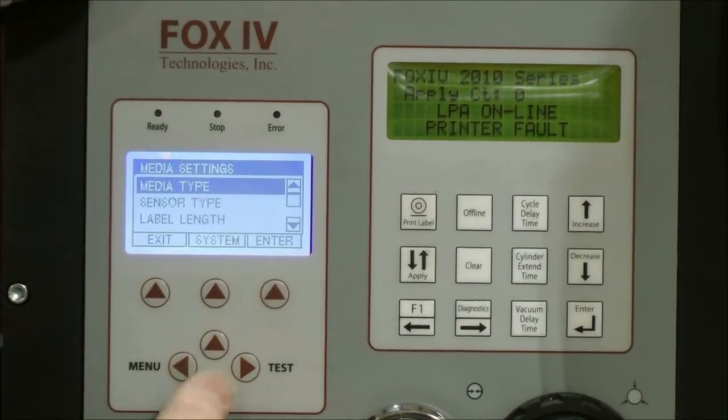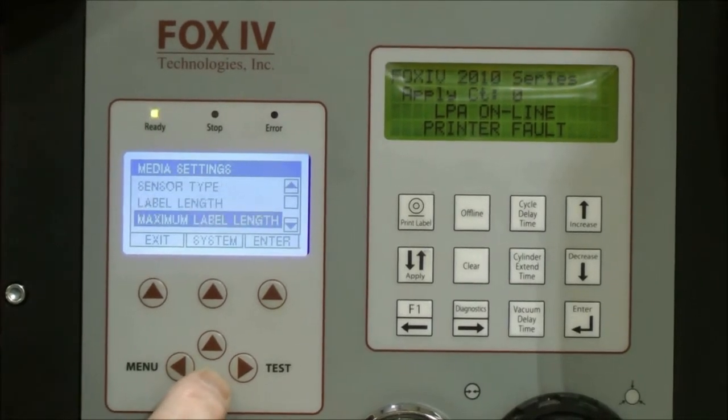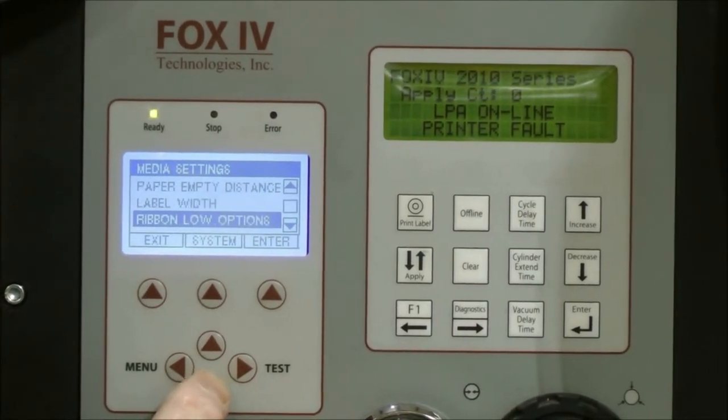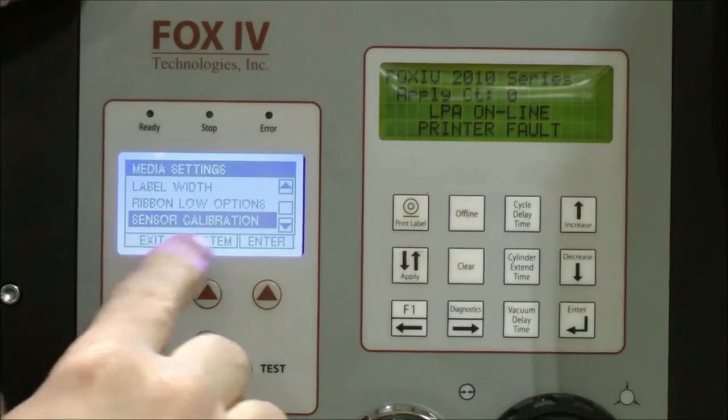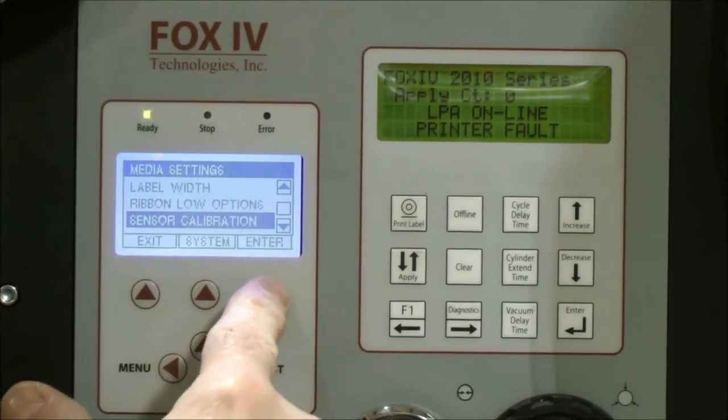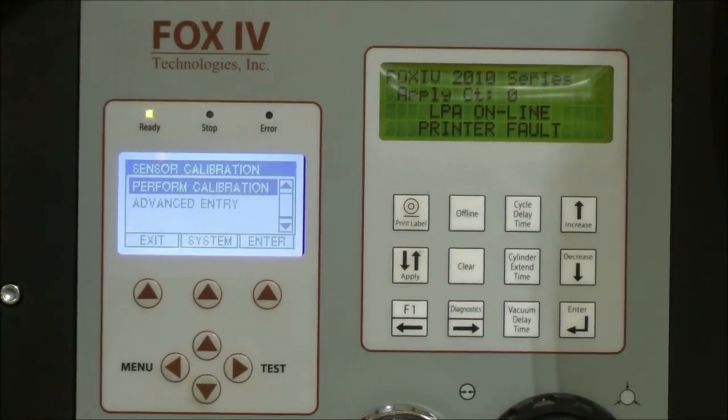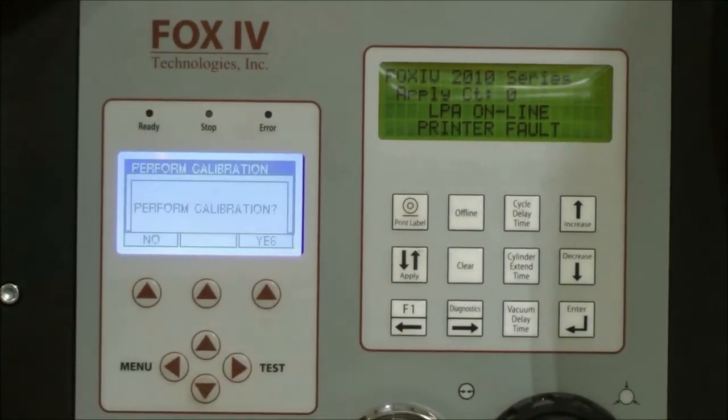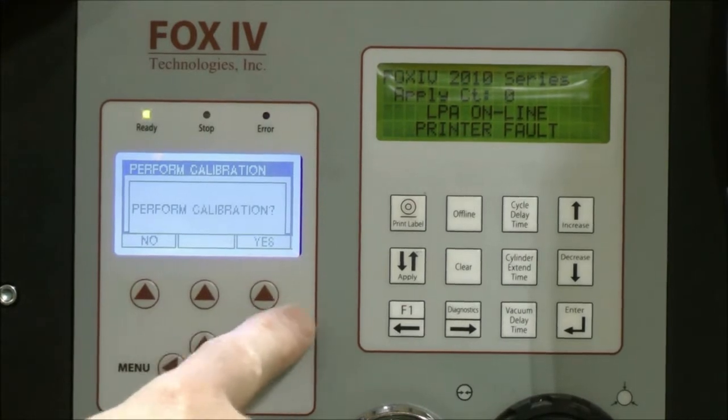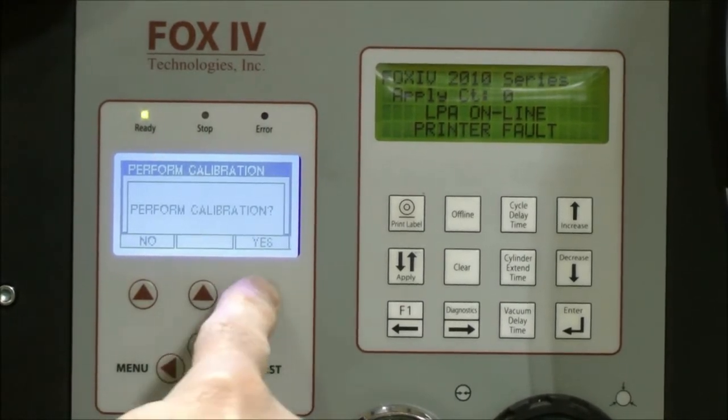Now, you're going to use the down arrow to scroll to where it says calibration, sensor calibration. You hit enter on that. Perform calibration is going to be highlighted. You hit enter on that. It's going to say yes or no. You say yes on perform calibration.